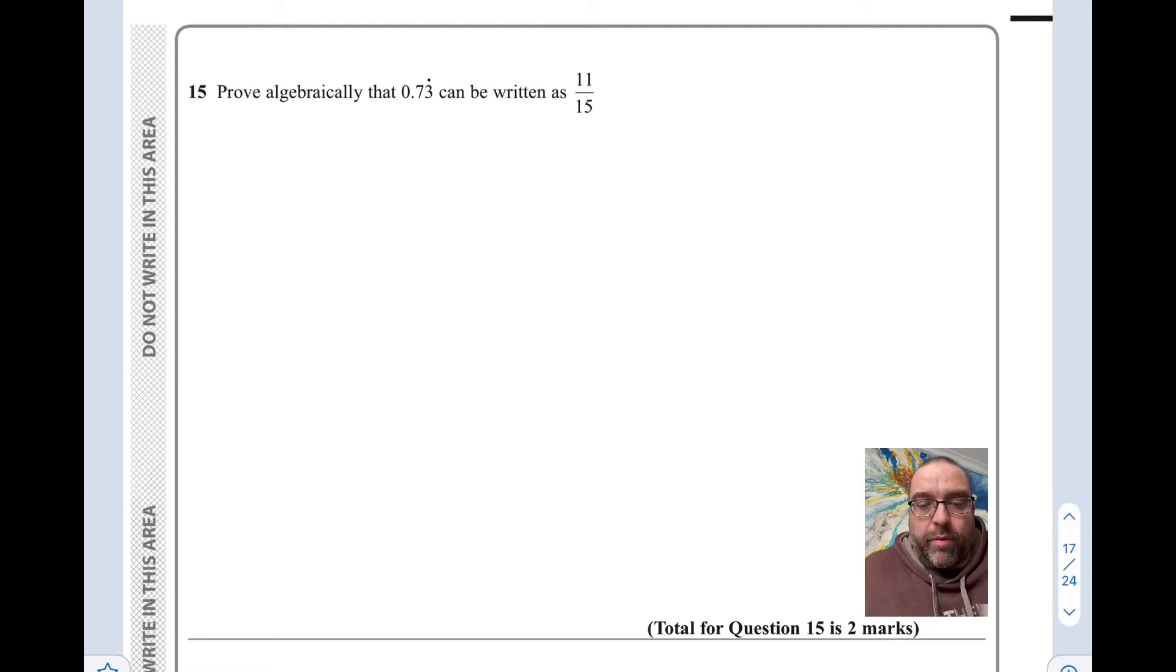Calculator allowed, but it won't help you with this particular question. So the process here is to start by saying let x equal 0.73 recurring.